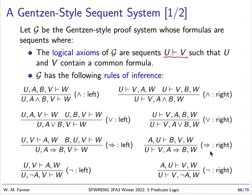Here's another example: implication right. If we have an implication as part of our sequent, we can move the first part of that implication to the beginning of the left side, and the second part to the beginning of the right side. And for implication left, where we have the implication on the left, we can move A to the beginning of the right-hand side and move B to the beginning of the left-hand side. In this case we actually have two premises.